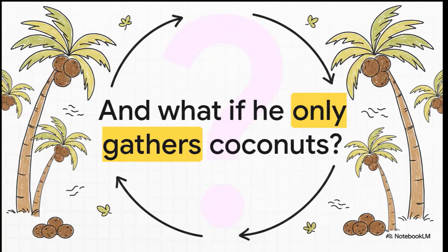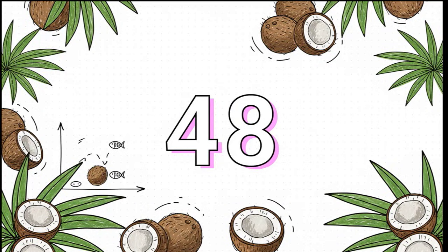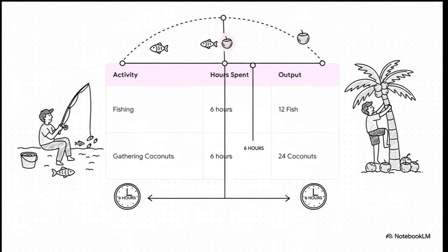Now for the flip side. What if he totally ignores the water, forgets fishing even exists, and dedicates his entire 12-hour day to coconuts? He'd have a whopping 48 coconuts — that's 12 hours times four coconuts every hour. This gives us our second major point: zero fish and all the way out at 48 on the coconut axis. But life is rarely all or nothing. Moshe can mix it up. If he splits his day right down the middle — six hours fishing gets him 12 fish, and the other six hours gets him 24 coconuts — that's another possible combo, a point right in between our two extremes.